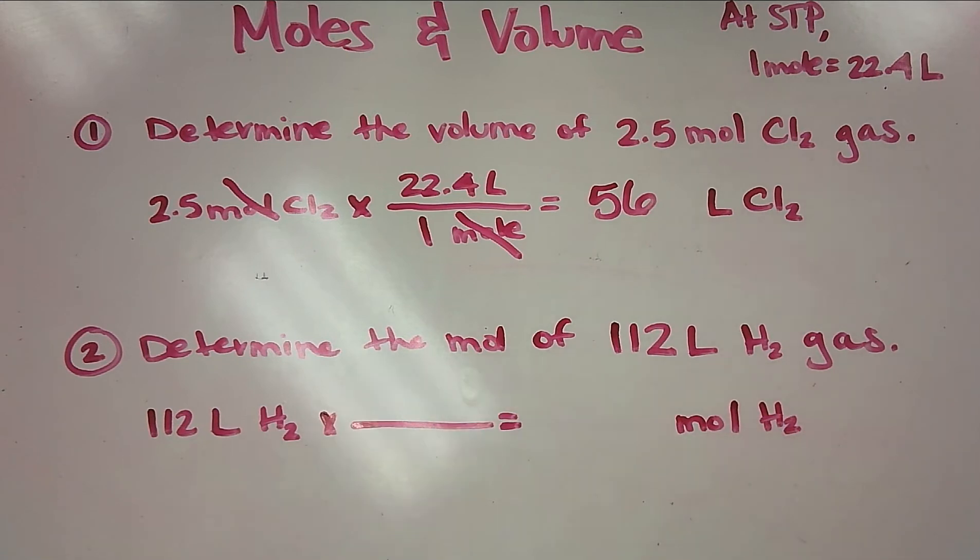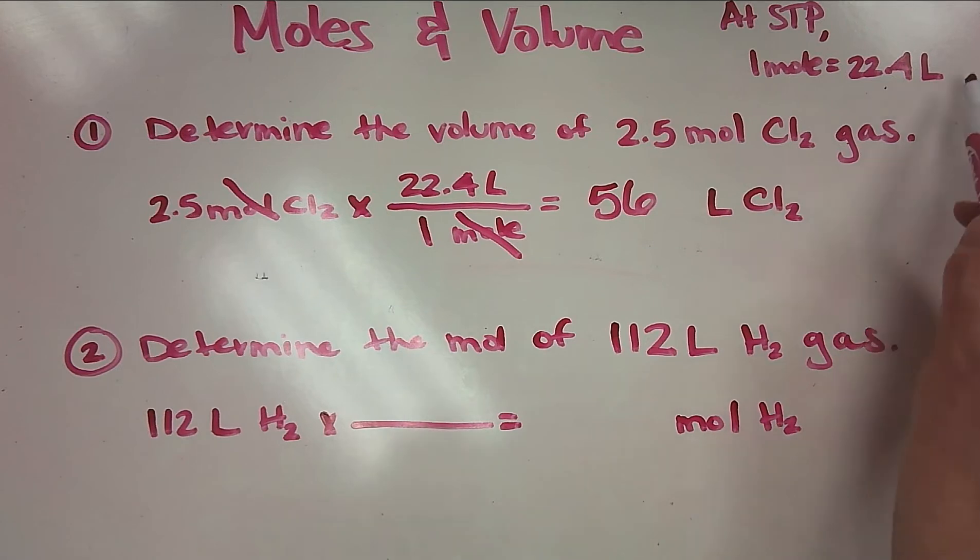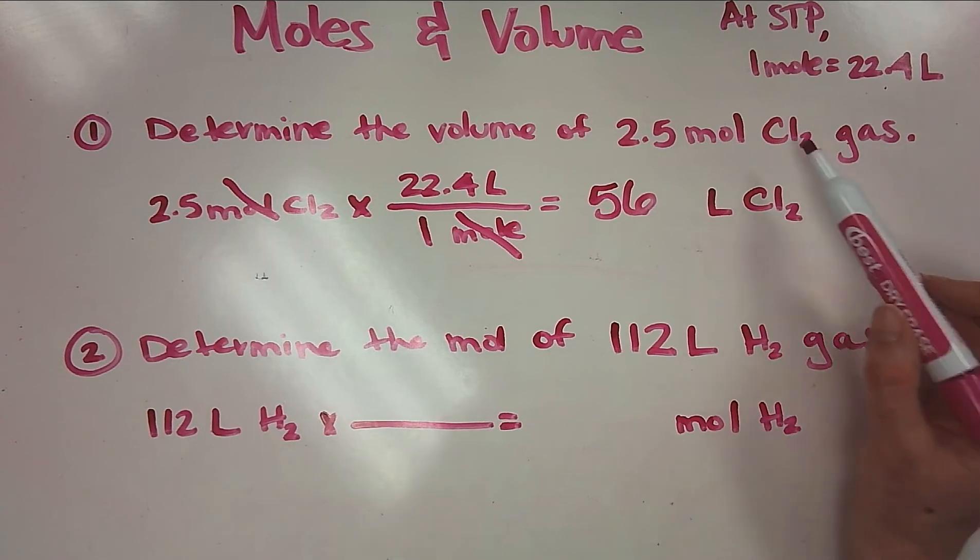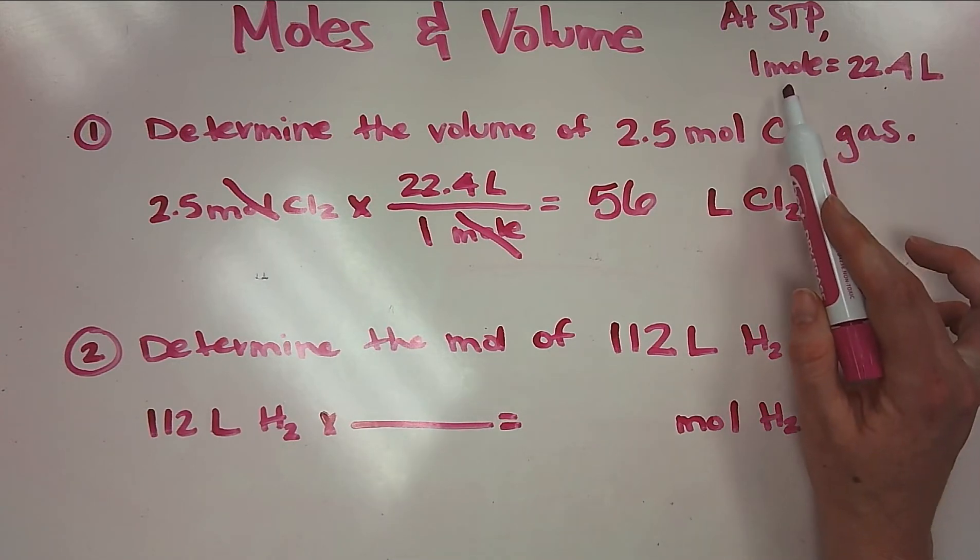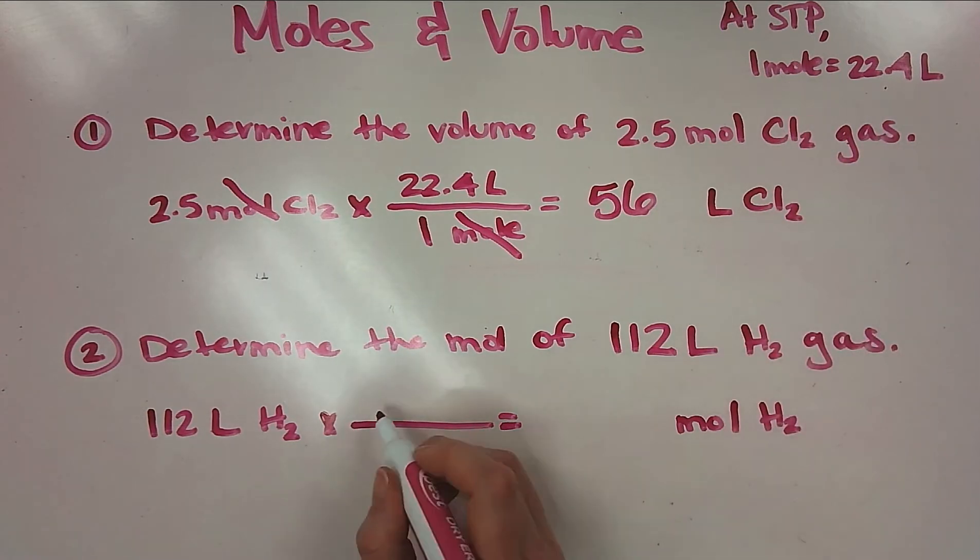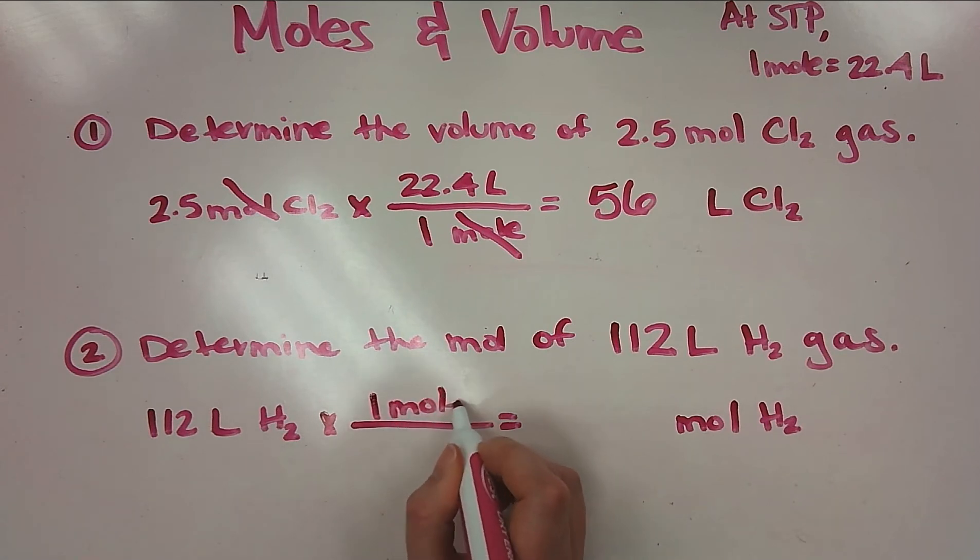Now I'm going to figure out how do I plug in this conversion factor to solve for what I want. If I want mole in the end, I need to place that half of my conversion factor on top and put the other half on the bottom, because when I do, my liters cancel out, and that's good because I didn't want to solve for liters anyway.